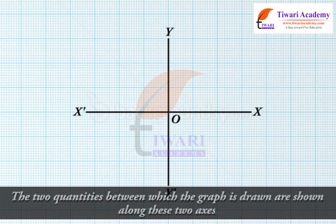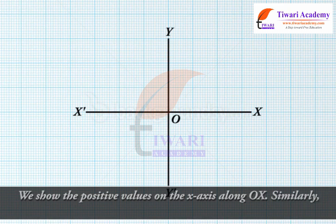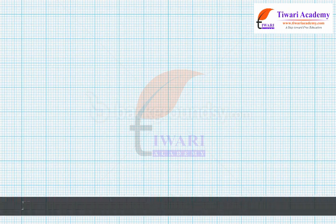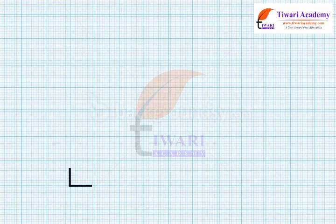The two quantities between which the graph is drawn are shown along these two axes. We show the positive values on the x-axis along OX, and similarly, positive values on the y-axis are shown along OY.